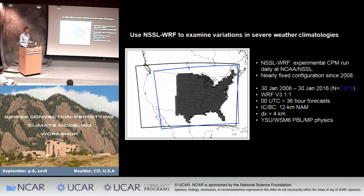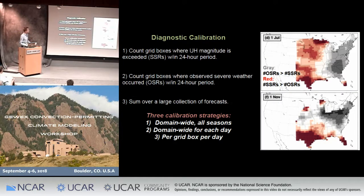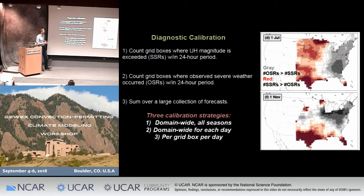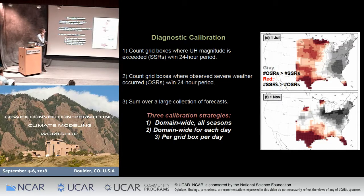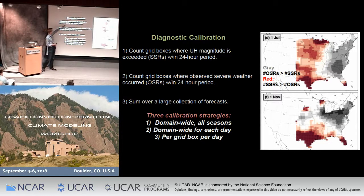These are 36-hour forecasts at four-kilometer horizontal grid spacing. We select our diagnostic — updraft helicity — and over a 24-hour period, compare the number of grid boxes where an updraft helicity threshold is exceeded with the number of observed severe weather reports in those grid boxes. We look at that over a large collection of forecasts to identify typical magnitudes for identifying severe convection. On the right, there are images of the bias — gray shading indicates more observed reports than the surrogate severe report threshold, and red indicates the model is producing more events than observed.